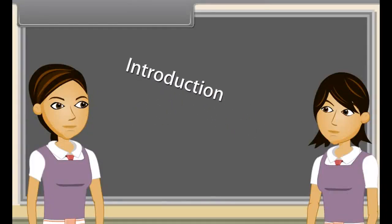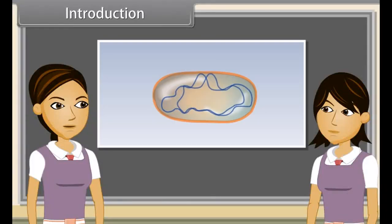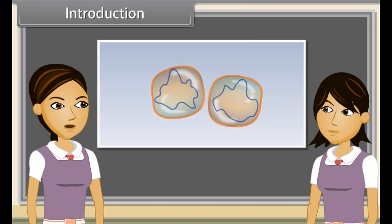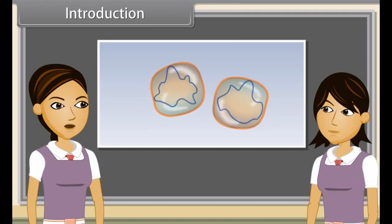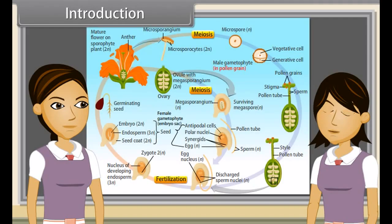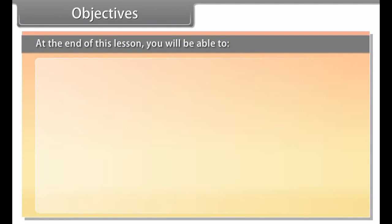Reproduction is the ability of all organisms to produce young ones similar to themselves in most characters. The process which involves fusion of male and female gametes to form a new individual is known as sexual reproduction.